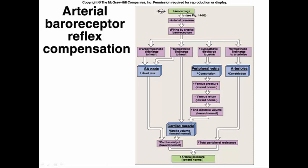Sympathetic discharge to the veins causes constriction of those veins, increasing venous return and end-diastolic volume, which raises stroke volume, resulting in higher cardiac output and blood pressure. Sympathetic discharge to the arterioles causes them to constrict, increasing peripheral resistance and therefore increasing blood pressure.